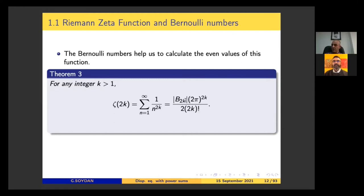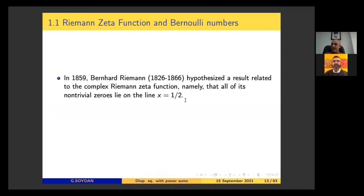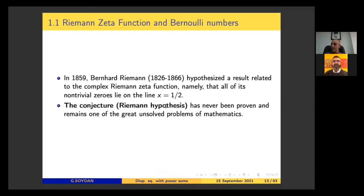The Riemann zeta function is more famous as a complex function with s in the complex plane. In 1859, Bernhard Riemann hypothesized a result related to the complex Riemann zeta function — namely, that all of its non-trivial zeros lie on the critical line. The conjecture has never been proven and remains one of the great unsolved problems of mathematics. Mathematicians have developed a whole branch contingent on the hypothesis being true, so a proof would immediately verify thousands of results.